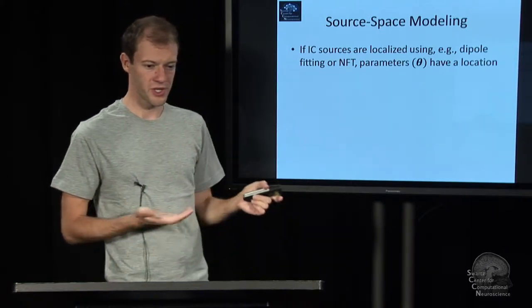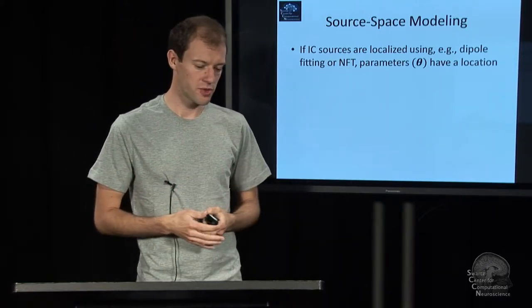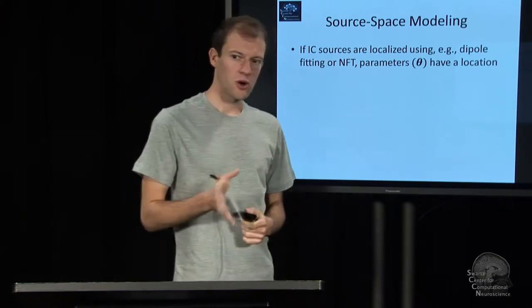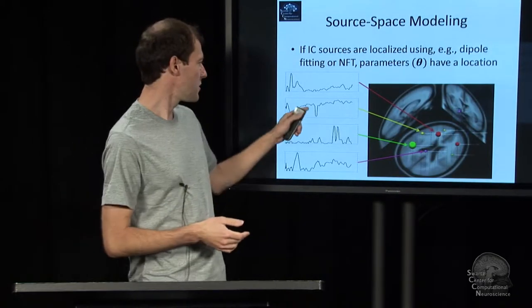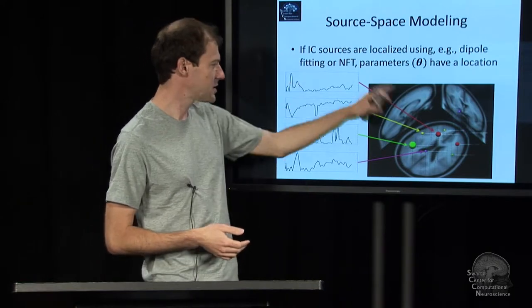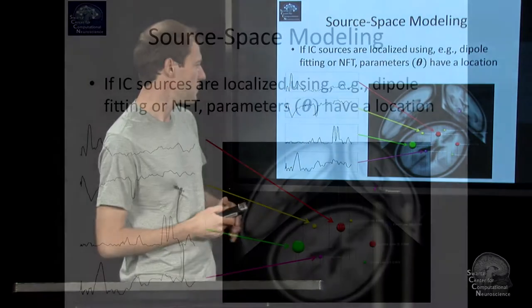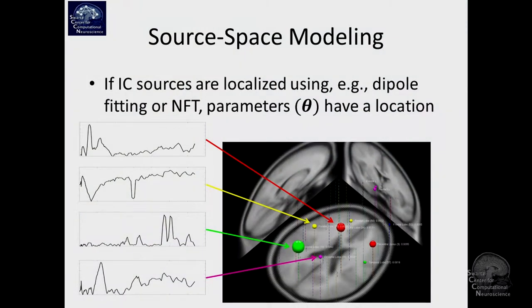distributed source localization, as what NFT for example offers, or a bunch of other toolboxes. Then each parameter is endowed with a location. For example, this model has parameters like weights and spectrum, such as 0.7 here, and this number has an assigned location in the brain.